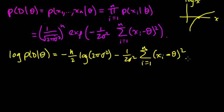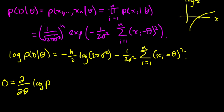Now we're maximizing with respect to theta, so let's differentiate this log-likelihood — this function is sometimes called the log likelihood, because the probability of D given theta is the likelihood function of theta — and set the derivative equal to zero. The first term is a constant with respect to theta, so its derivative is zero.